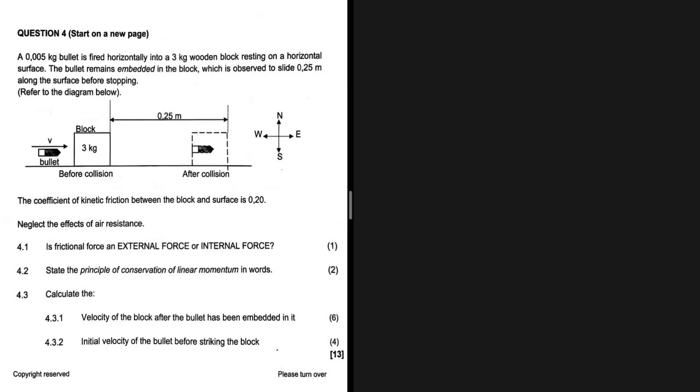A bullet is fired horizontally into a 3 kg wooden block resting on a horizontal surface. The bullet remains embedded in the block, which is observed to slide 0.25 meters along the surface before stopping. Refer to the diagram below. We have our diagram, which is not new. We have seen a bullet block system before. The coefficient of kinetic friction between the block and the surface is 0.2. Neglect the effects of air resistance.